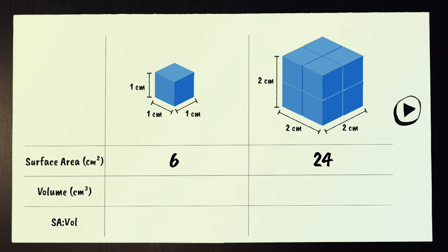We need to compare the surface area of each cube with its own volume. The small cube has a volume of one by one by one, which is one centimeter cubed. It has six square centimeters of surface area for every one cubic centimeter of volume. We can say that it has a surface area to volume ratio of six to one.